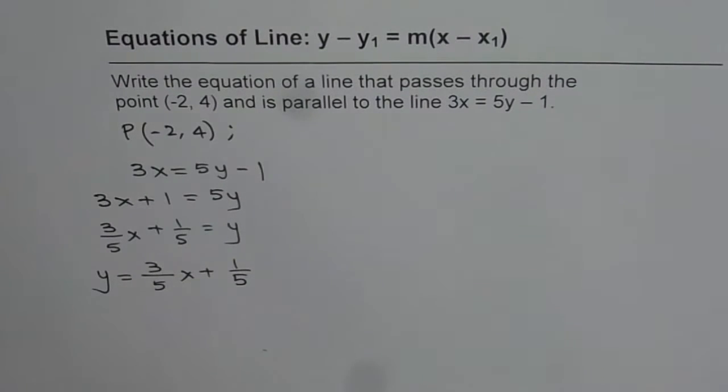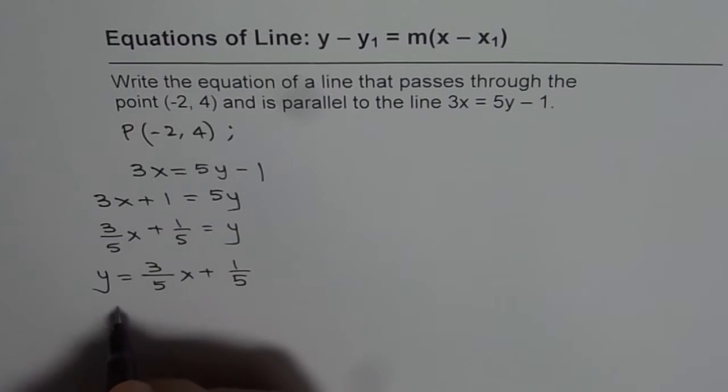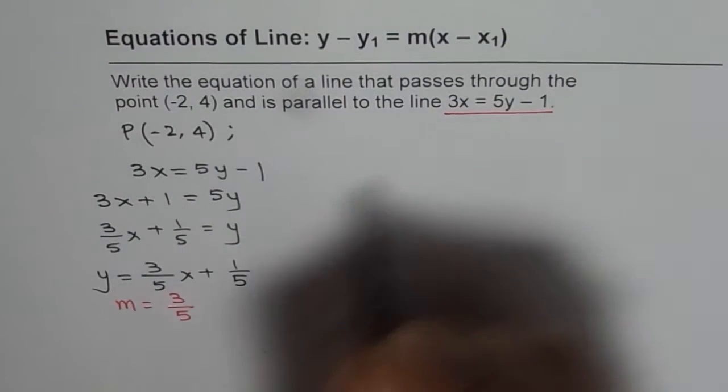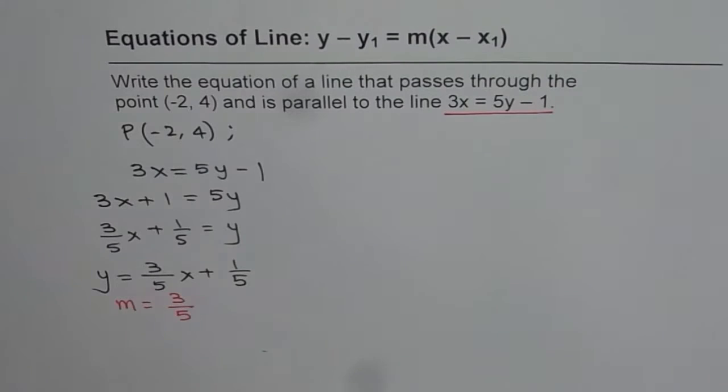And now I think you can get the slope and the y intercept. So from here slope of this line m is 3 over 5. So slope of the given line is 3 over 5.